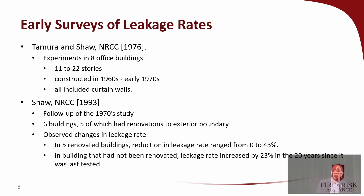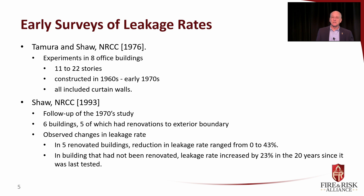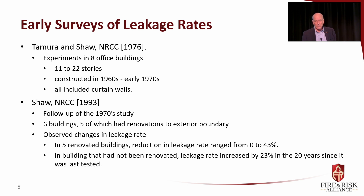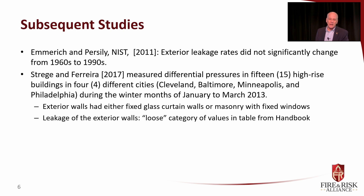Tamar and Shaw from NRC Canada in 1976 did experiments in eight office buildings constructed in the 1960s to early 1970s, all with curtain walls. Shaw from NRC repeated this study in 1993 with six buildings, five of which had renovations to the exterior boundary. In the renovated buildings, renovations in some cases did nothing to leakage and in other cases cut it by up to 43%. The building that had not been renovated saw leakage increase by 23% in the 20 years since it was last tested — that building got more leaky with age.